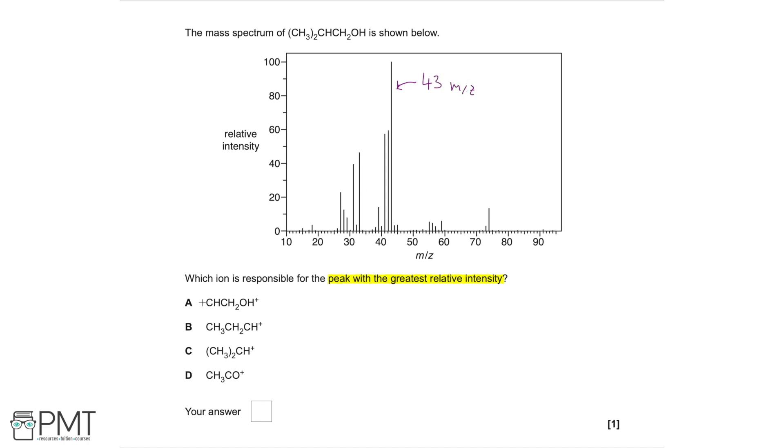We need to look at the ions that we've been shown and check what each of their masses are. So first of all, we've got option A: two carbons, four hydrogens and an oxygen. That's going to be 44.